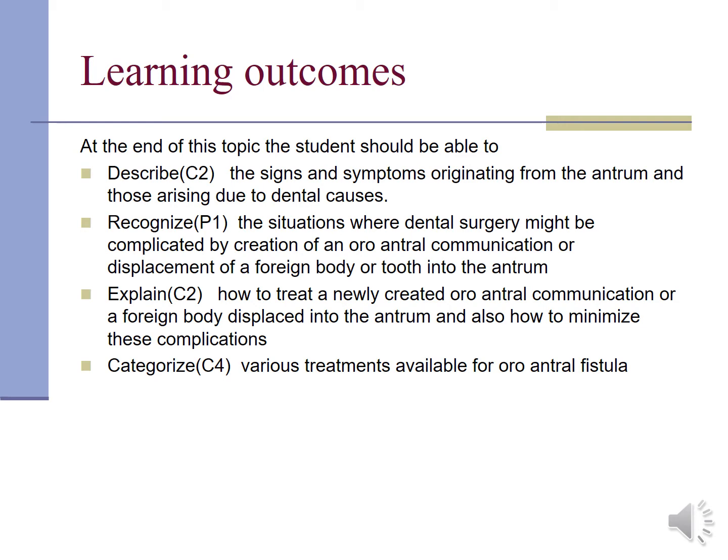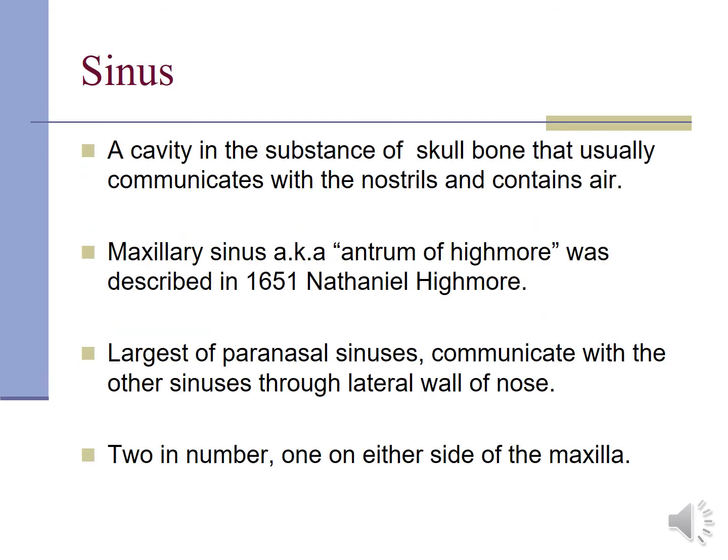You will also be able to categorize various treatments available for oral antral fistula. Before we start, let's go through the basics. A sinus is a cavity in a skull bone that usually communicates with the nostrils and contains air. The maxillary sinus, also known as the antrum of Highmore, is named after Highmore who described it in 1651. It is the largest paranasal sinus, communicating with other sinuses through the lateral wall of the nose.